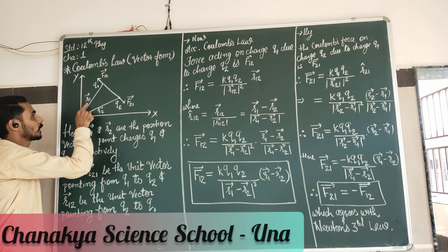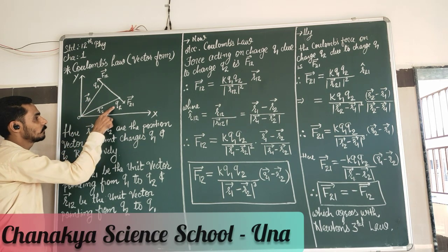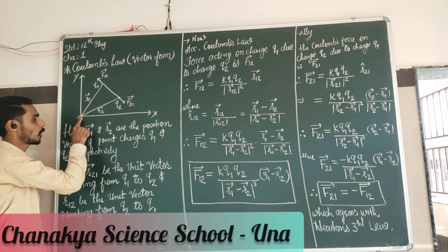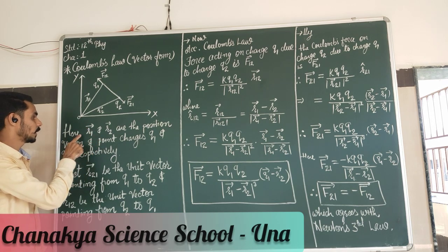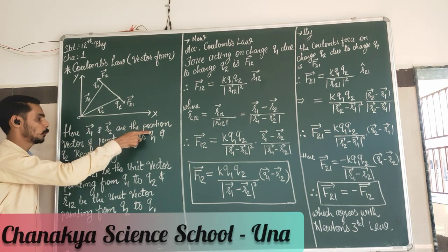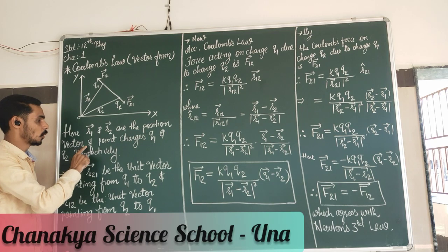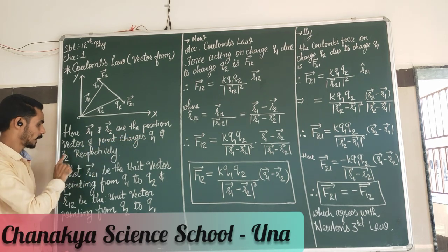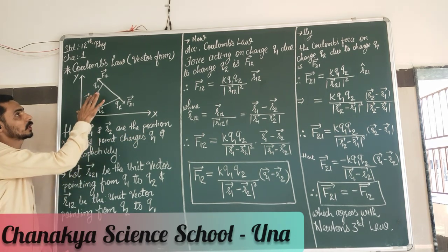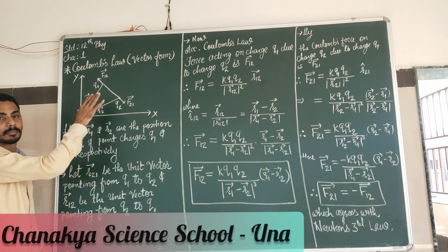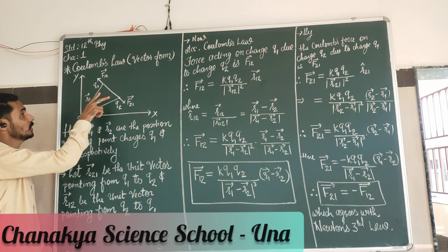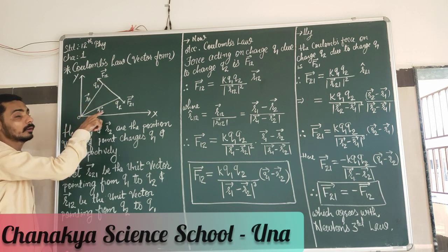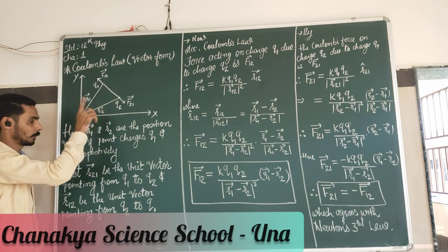Q1 has position vector R1 and Q2 has position vector R2 with respect to point O. So here R1 and R2 are the position vectors of point charges Q1 and Q2 respectively. We have two point charges Q1 and Q2 whose position vectors are R1 and R2.